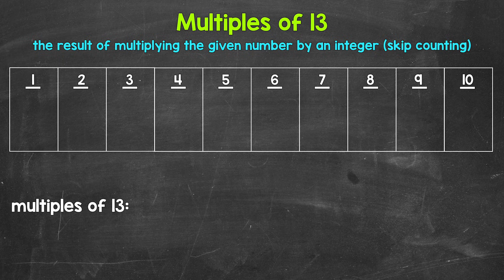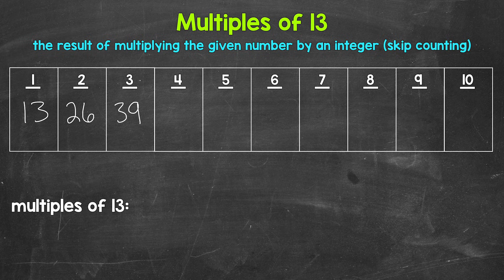So looking at the multiples of 13, we start with one times 13 — that gives us 13. 13 is the first multiple of 13. Then we have two times 13, that's 26. 26 is the second multiple of 13. Then we have three times 13, that's 39. Four times 13, 52.